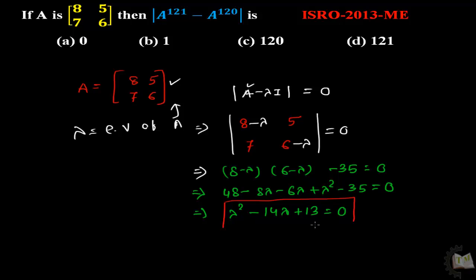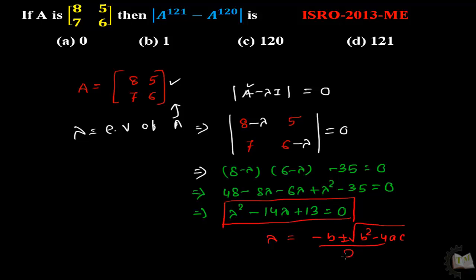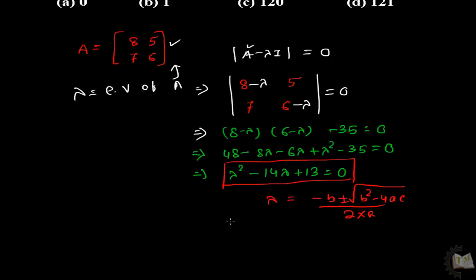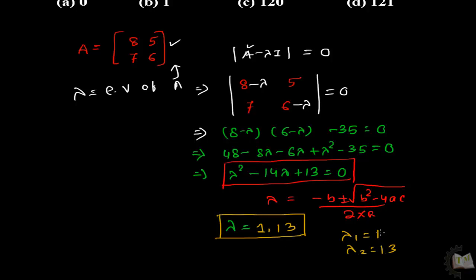Since a calculator is not allowed in the exam, you have to solve by applying the quadratic formula: lambda equals minus b plus or minus the square root of b squared minus 4ac, all divided by 2a. You will get the two eigenvalues as lambda₁ = 1 and lambda₂ = 13.